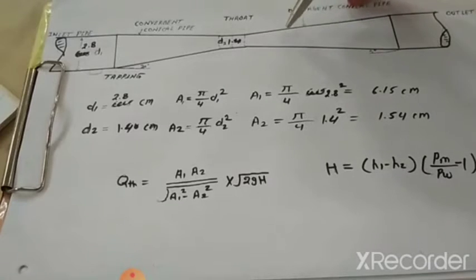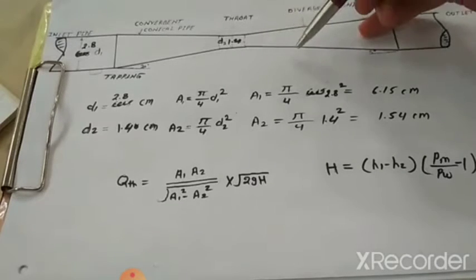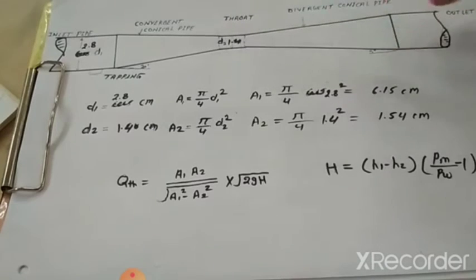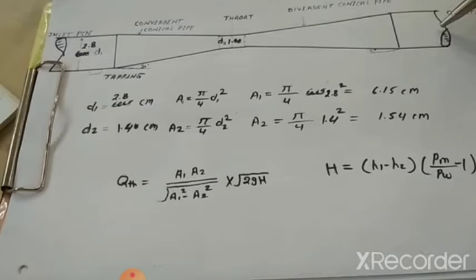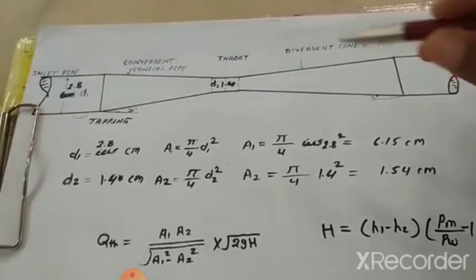Now the formula of calculating the venturi meter is given as qth, that is qh equal to a1 a2 upon root over a1 square minus a2 square into 2gh.